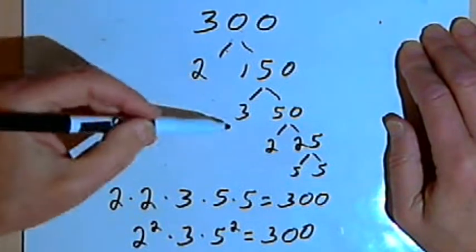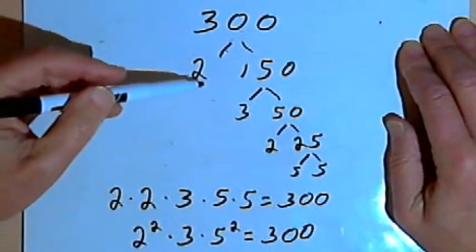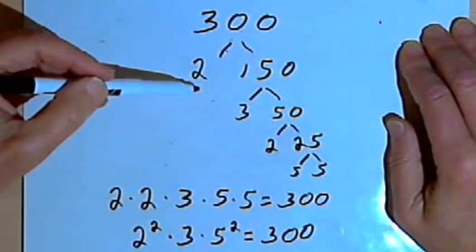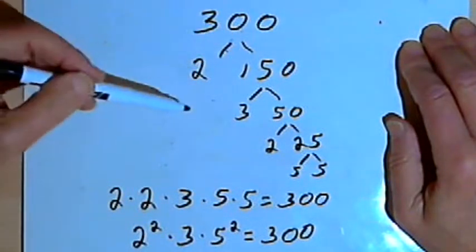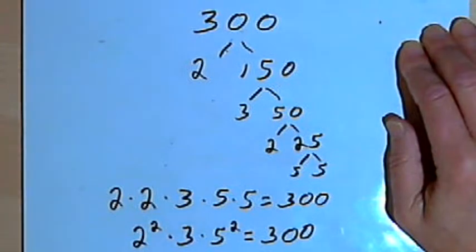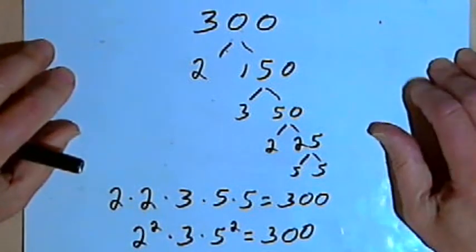But at the ends of each of the branches, I've got exactly the same prime factors. So no matter how you do it, you're going to end up with one unique prime factorization.